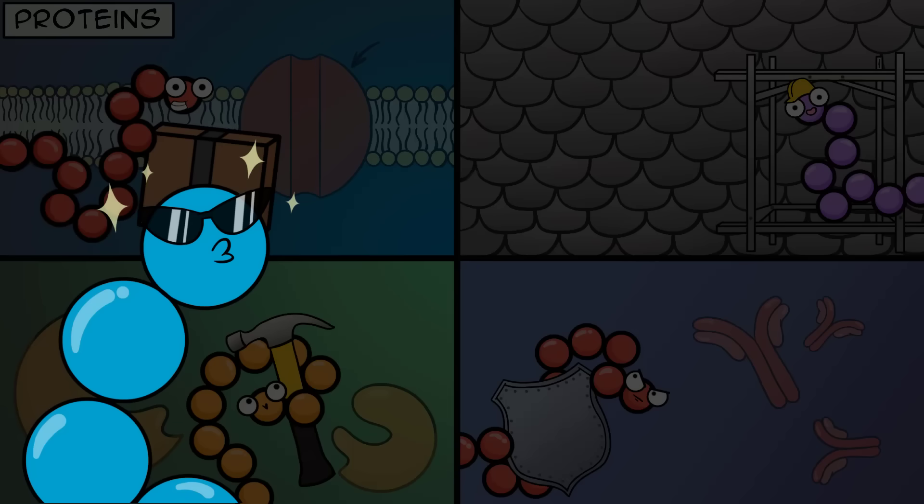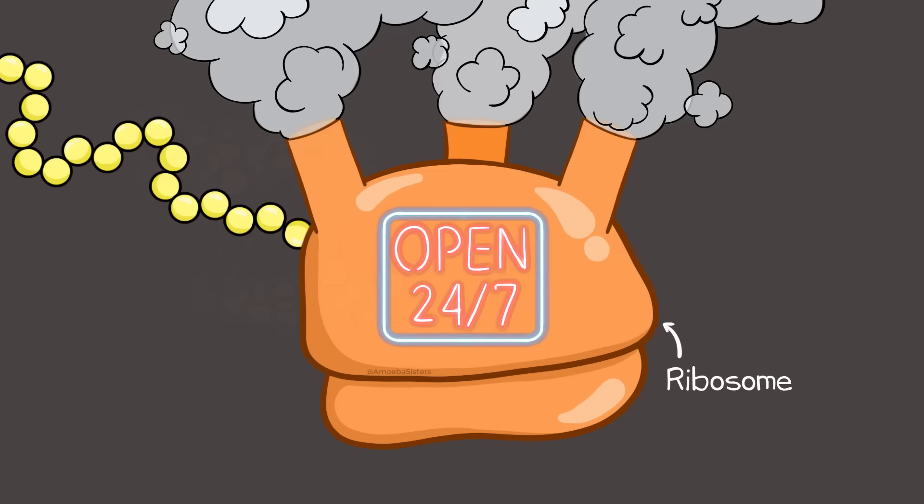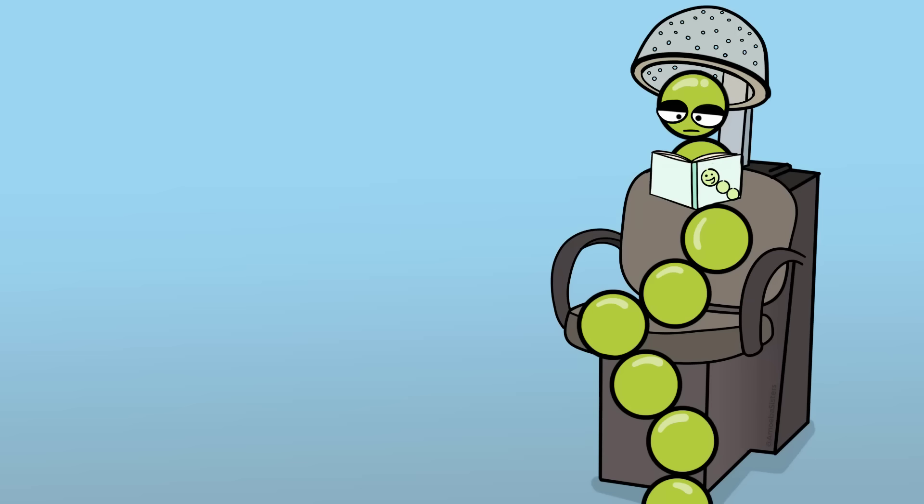We've mentioned how amazing proteins are. They can play so many roles. They can make up channels, be part of a structure, serve as enzymes for important biological processes, be involved with protecting the body—just to name a few. We've also mentioned that you are making proteins all the time, in a process known as protein synthesis. But the conclusion of producing a long chain of amino acids doesn't necessarily equal a functional protein. There are modifications to a protein that often need to happen in order for it to be functional.